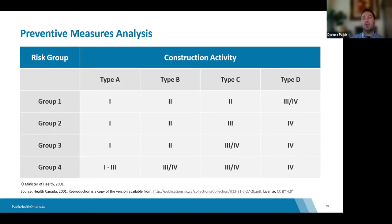You simply identify the population at risk and the work involved, go to the table, and you can easily see what measures are required. Recalling that the long-term care population falls under the geriatrics risk category group, the majority of activities under group three fall under higher PM measures — levels two, three, and four — so most activities do require quite a few measures to be carried out safely.